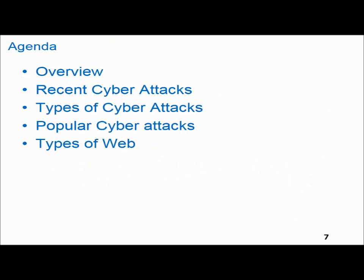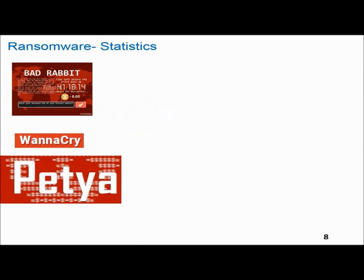Looking at recent cyber attacks: 2017 was the year of ransomware. Notable attacks included Bad Rabbit, WannaCry, and Petya. The key feature of these attacks is that ransomware locks the victim's computer terminal, and the attacker demands a ransom — paid through Bitcoin — before releasing the system.